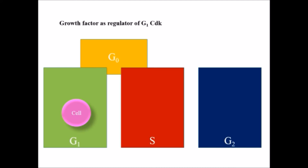I am now discussing the first phase of the cell cycle, which is G1. The first requirement for a cell to initiate division is proper nutrition and growth factors. If proper growth factors and conditions are available, the cell will initiate and pass the first restriction point at G1. If growth factors are available, signaling molecules become active.